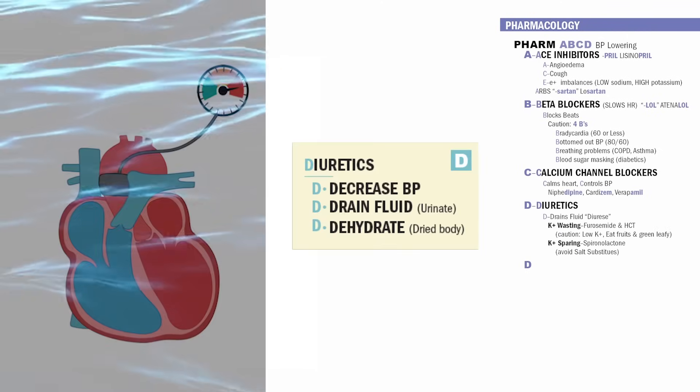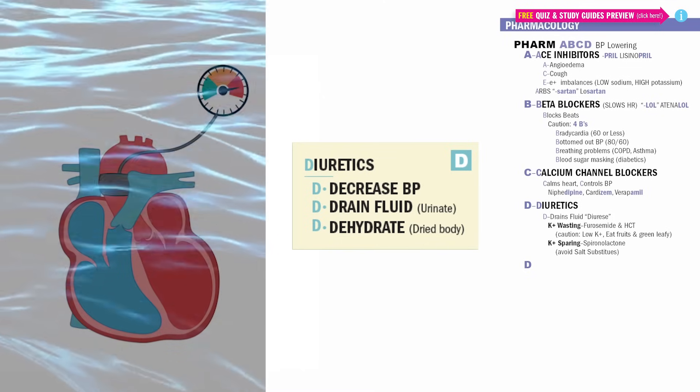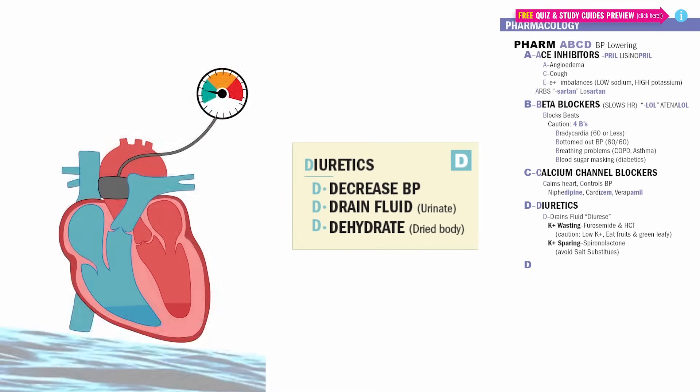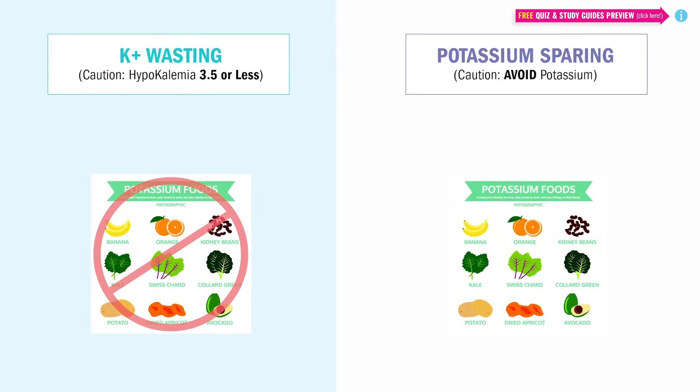D is for diuretics. Think D for decreases the blood pressure by draining the fluid from the body into the potty, which also dehydrates the body. Think a dried body. We have potassium wasting and potassium sparing diuretics. For potassium wasting, we have furosemide and hydrochlorothiazide. Both of these rhyme with dried.